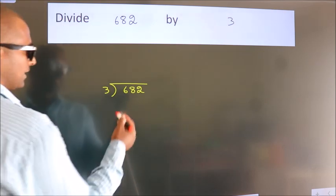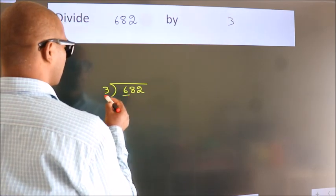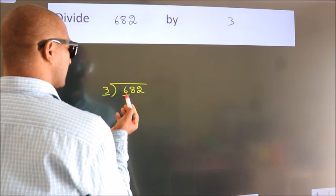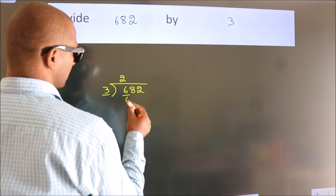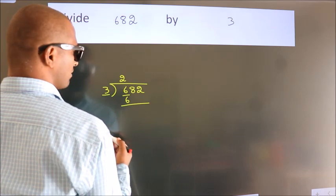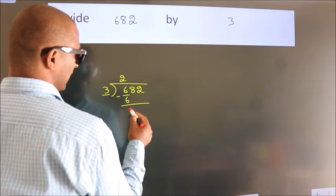Next. Here we have 6, here 3. When do we get 6? In the 3 table. 3 times 2 is 6. Now we should subtract. We get 0.